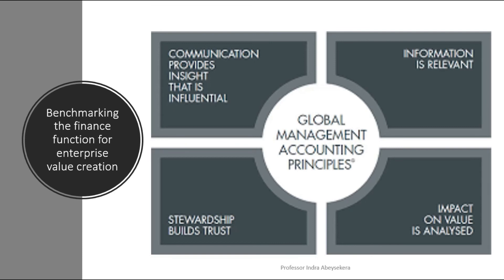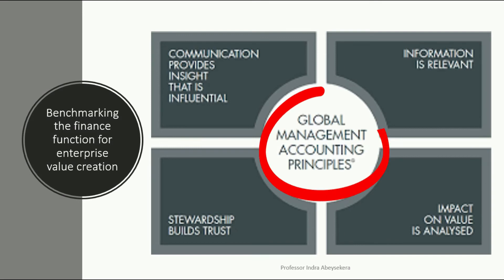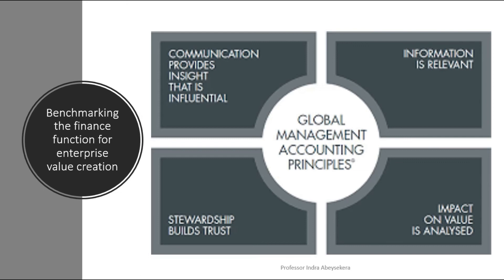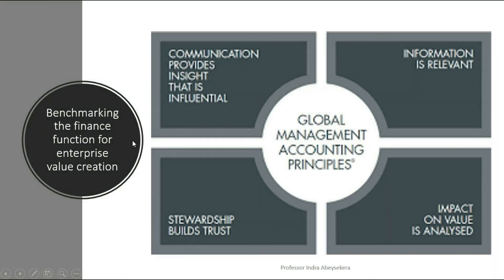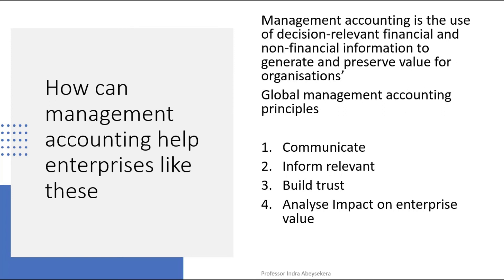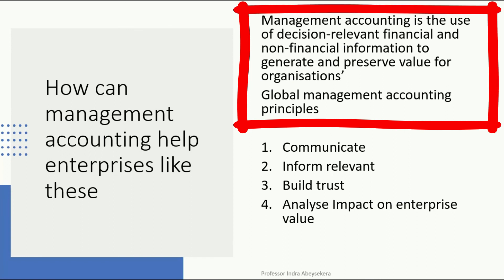Another way to look at this is to take the Global Management Accounting Principles framework and look at the four principles embedded in it. These are: communication that is insightful and influential; gathering and sharing relevant information; examining the impact on value; and building trust. In relation to Sundrop Farms, it used decision-relevant financial and non-financial information to generate and preserve value for the farm.